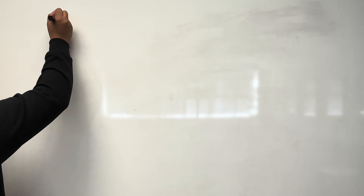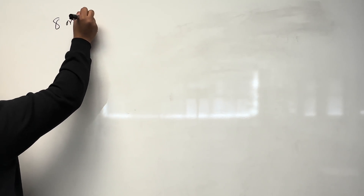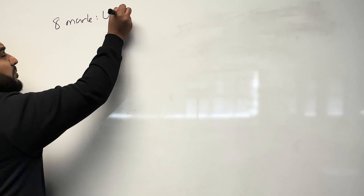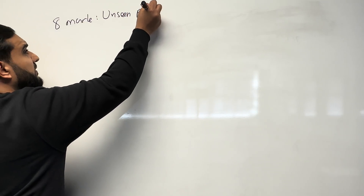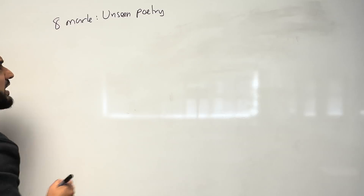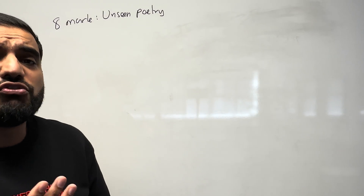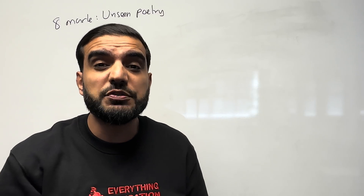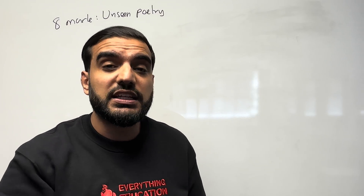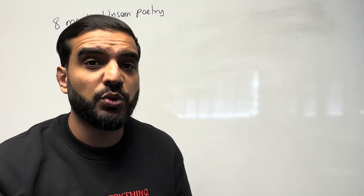Welcome to another video, you've got Mr. Everything English, and today we are talking about the middle child — the one that doesn't get much attention. We are talking about the eight mark question in the unseen poetry exam. For some reason, this question isn't really focused on much, and a lot of students don't even know that they have an eight marker unseen poetry question.